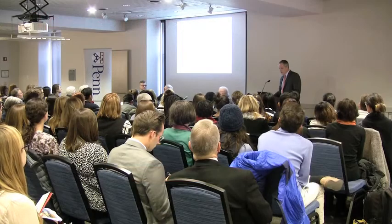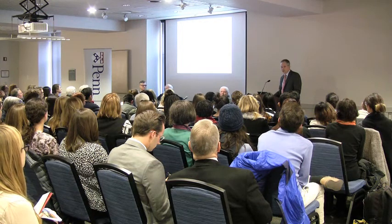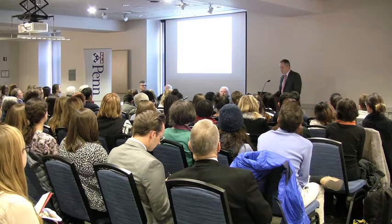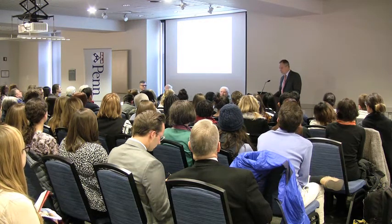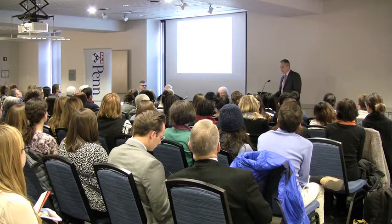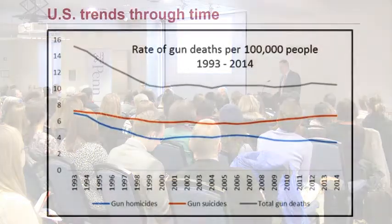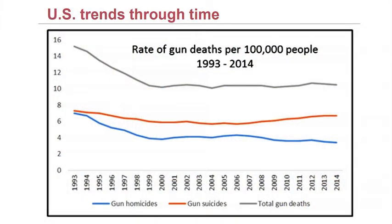How does this look through time? In the 1990s, gun deaths per 100,000 people in the United States went down, but those numbers have been relatively stable over the last 15 years. The yellow line represents gun suicides, while the blue line represents gun homicides.